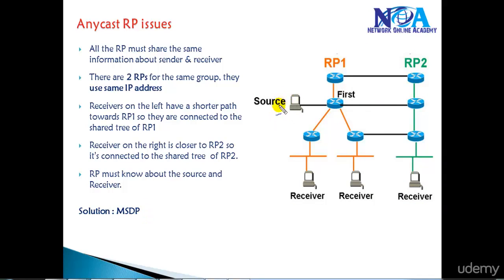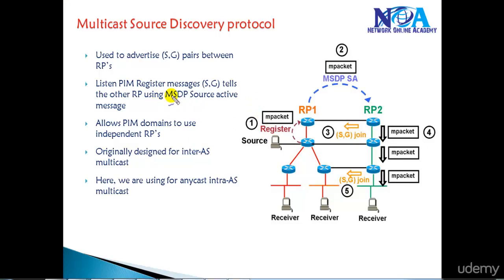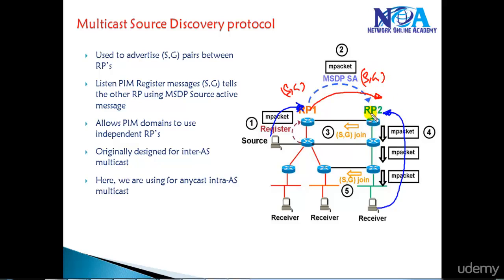To overcome this issue where a source registers to one RP and a receiver joins a different RP based on the shortest path, we use Multicast Source Discovery Protocol (MSDP) to combine the two different PIM domains. MSDP sends S,G entries to the other RP using Source Active messages. These Source Active messages contain information about the source S,G entries forwarded to RP2, which then forwards them back to the receiver so the receiver can build the shortest path to reach the source.